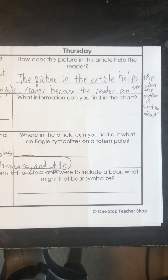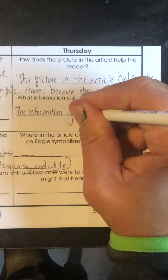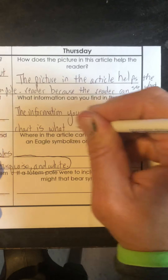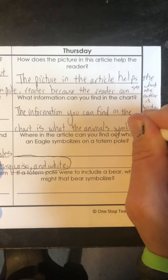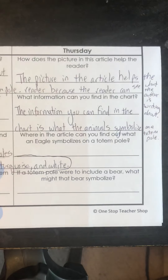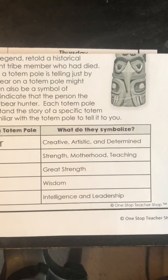What information can you find in the chart? The information you can find in the chart is what the animals symbolize on a totem pole. I found that out just by looking at the animals there and what they symbolize.